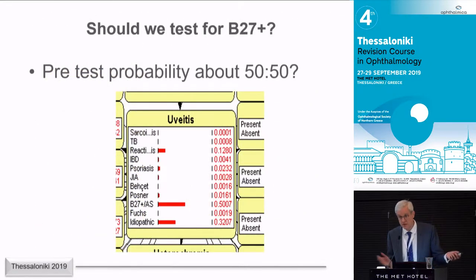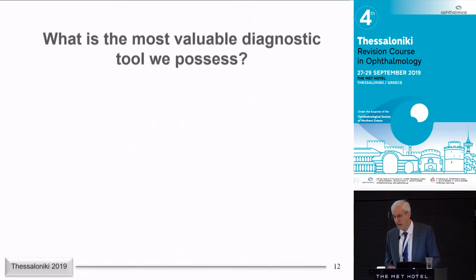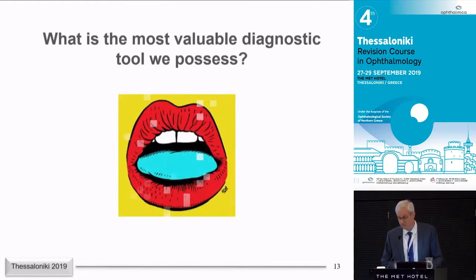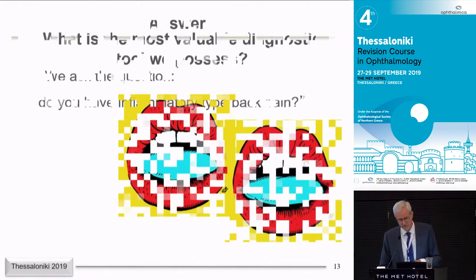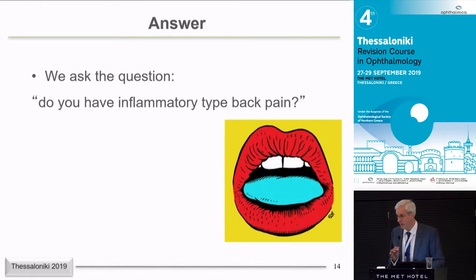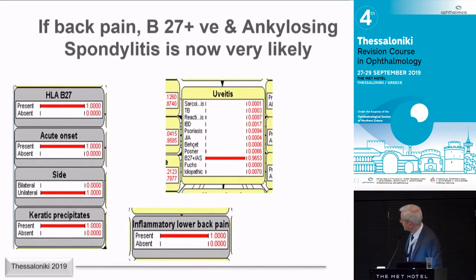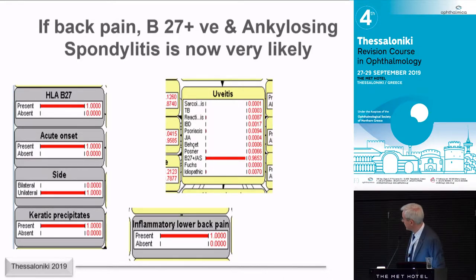Should we test this patient for B27? Well, the pre-test probability is about 50-50. But what's the most valuable tool we possess? It's actually what we ask the patient. We ask: do you have inflammatory-type back pain — morning stiffness, pain? If the patient says yes, it suddenly raises the probability of B27-associated anterior uveitis, possibly linked with ankylosing spondylitis, hugely. And we should test. The post-test probability really shoots up — that's how the mathematics of it works.